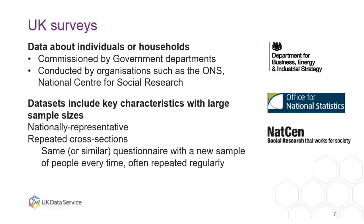UK surveys tend to be data about individuals or households, and they are often commissioned by government departments and conducted by large organizations such as the Office for National Statistics or the National Centre for Social Research, otherwise known as NatCen. Each dataset includes key characteristics such as gender and level of education. They have large sample sizes, around 3,000 plus — some up to 40,000 — and they are nationally representative, meaning you can use the sample to create estimates for the whole population.